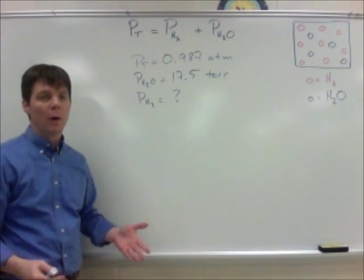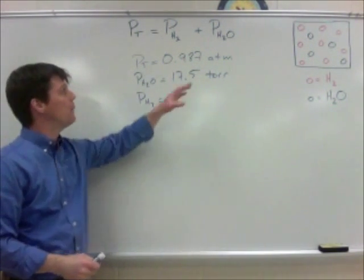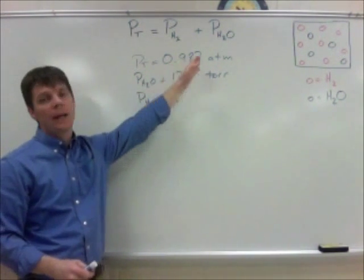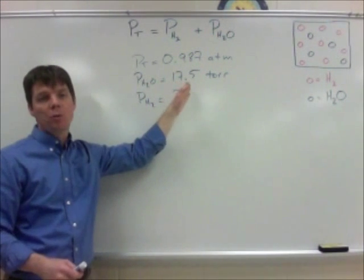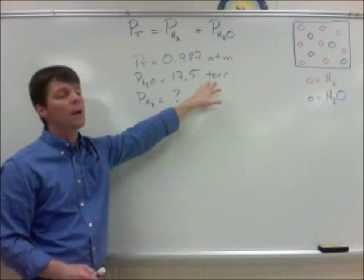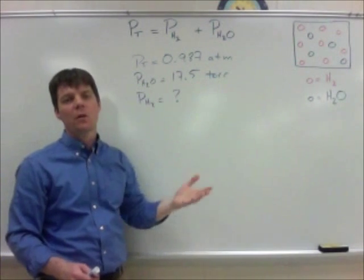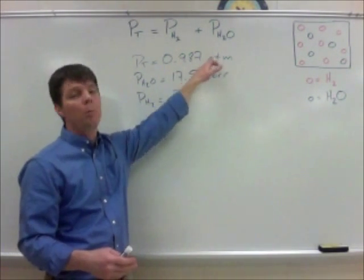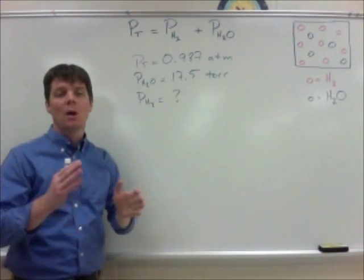As I look at this I can see that I'm going to have an issue. The problem is that we're given the total pressure of the container in units of atmospheres and we're given the partial pressure of water in the container in units of torr. This is going to require that we set up a conversion so that we're comparing both of our pressures with the same unit.